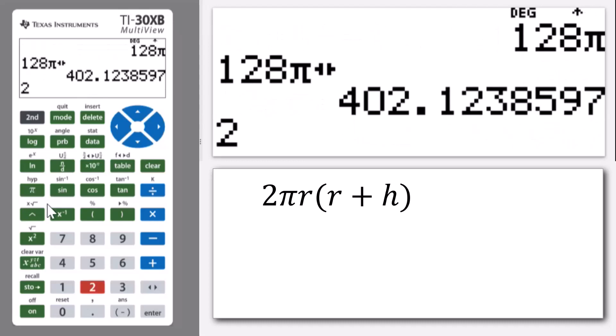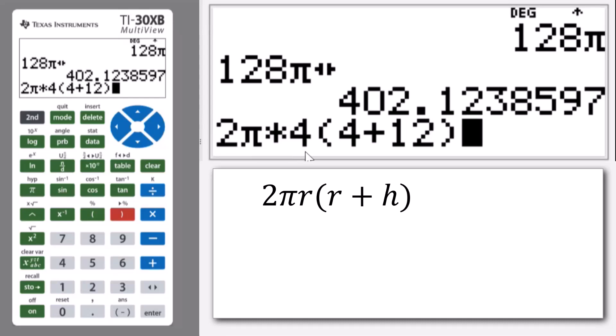So if I go 2π and then I can open up, multiply by 4 and then open up a bracket and I want 4 plus 12 and close my bracket. So I have 2πr and then that's multiplied by r plus h. And if I press enter I get that 128π again.